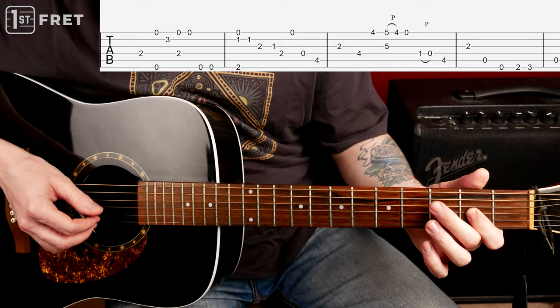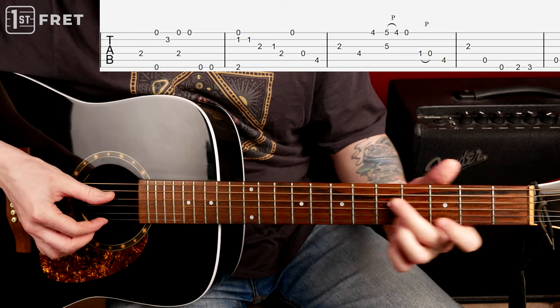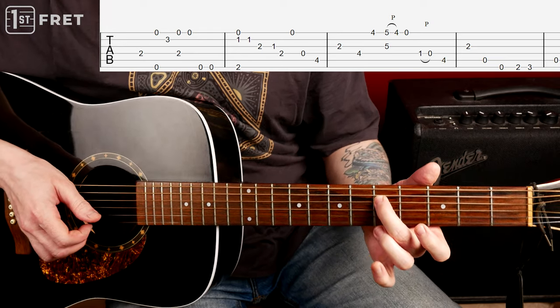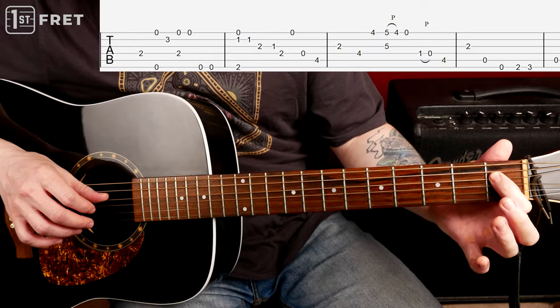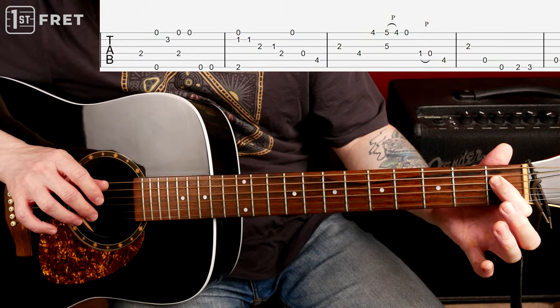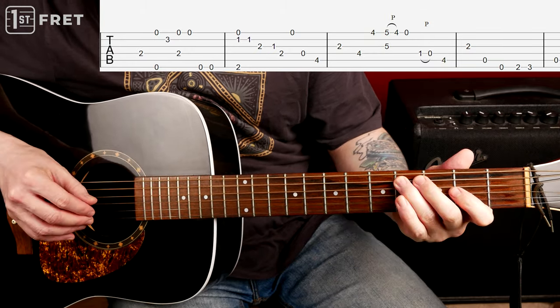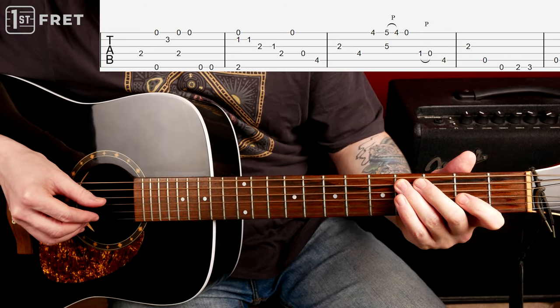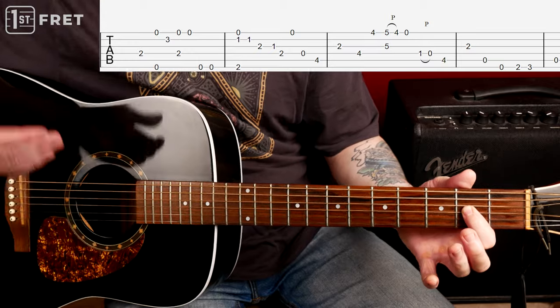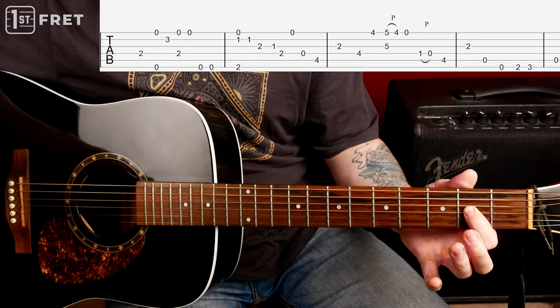Again: 1, 2 and 3, and. And then fret 1 on the D, pull off, fret 4 on the A: 1, 2, 3, and fret 2 on the G again.